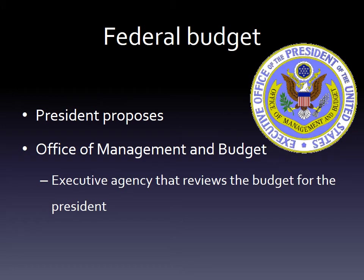The federal budget: the president proposes the federal budget to Congress, and the agency that helps him do that is the Office of Management and Budget, often referred to as the OMB. They are the executive agency that reviews the budget for the president. The president doesn't personally make every line of the budget — it's hundreds, sometimes thousands of pages. The OMB is the agency in charge of that, and they work for the president.